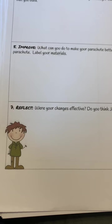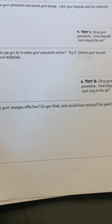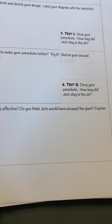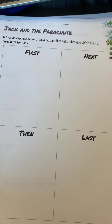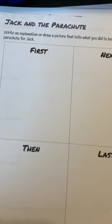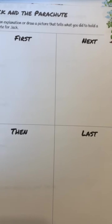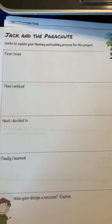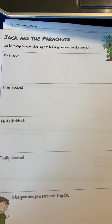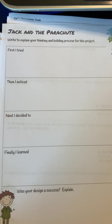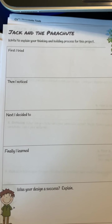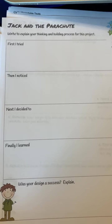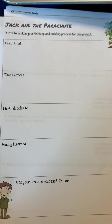And number seven: Reflect — were your changes effective? Do you think Jack would have escaped the giant? Explain. Write an explanation or draw a picture that tells what you did to build a parachute for Jack, using the words first, next, then, and last. Write to explain your thinking and building process: 'First, I tried blank. Then, I noticed blank. Next, I decided to. Finally, I learned.' Was your design a success? Explain.